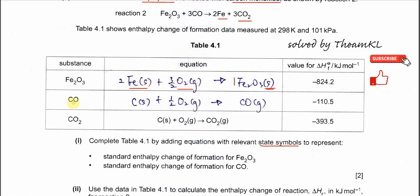For carbon monoxide, make sure one mole of CO is formed as a gas. Carbon monoxide is formed from carbon, which is a solid, and oxygen. Balance the equation to get the correct equation for the formation of CO.